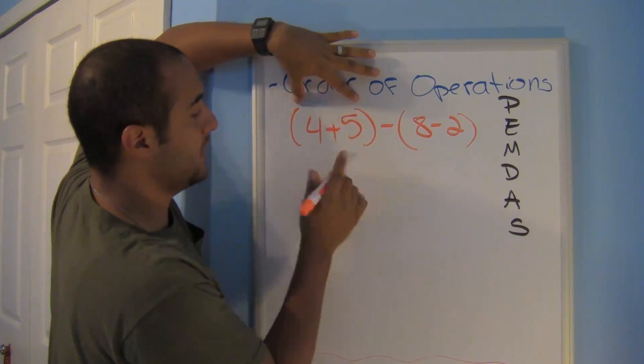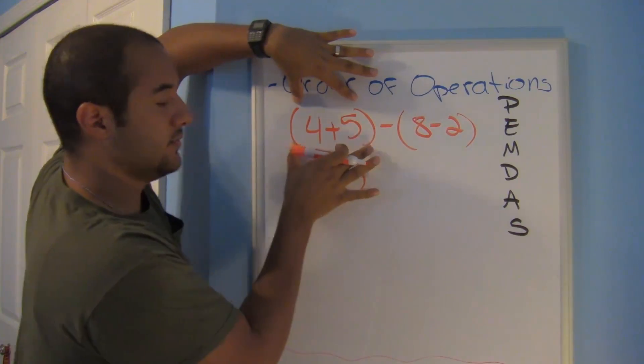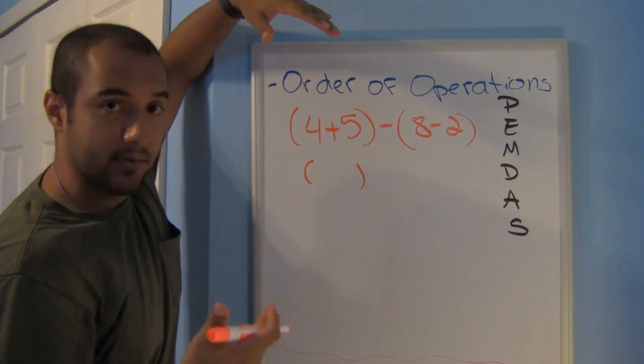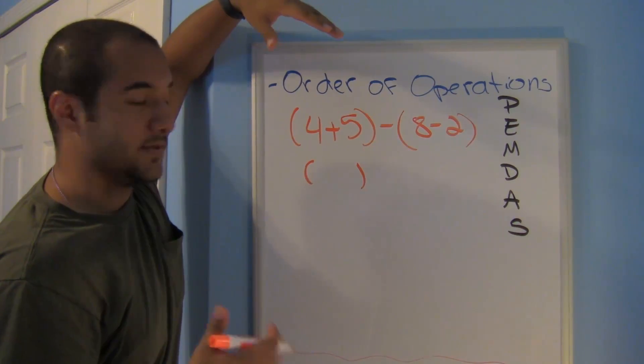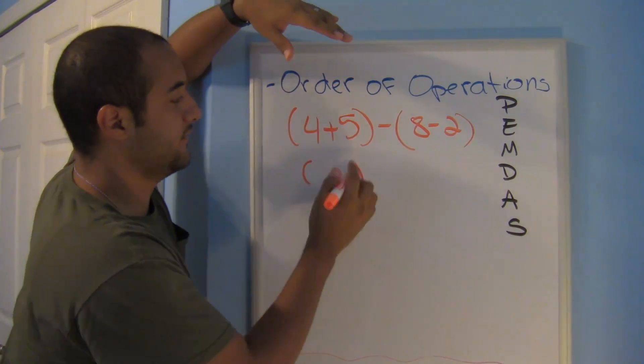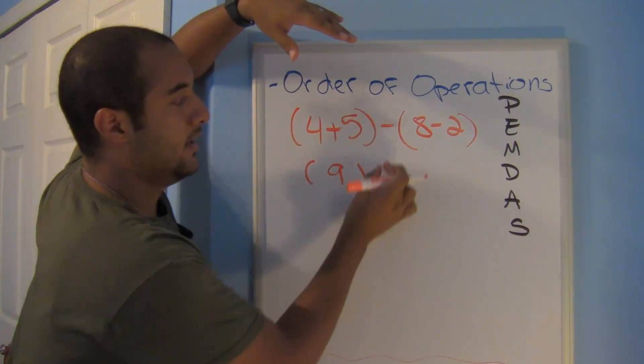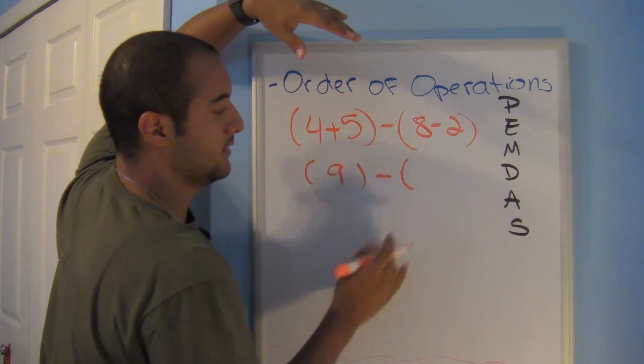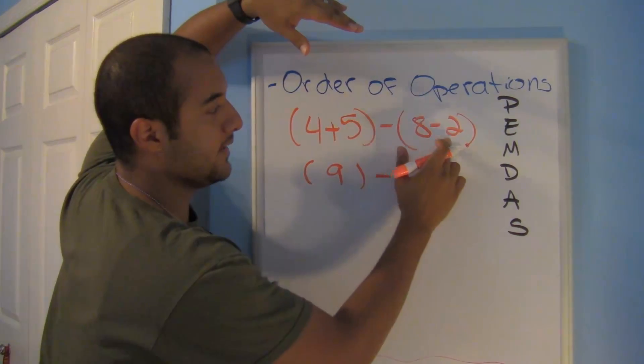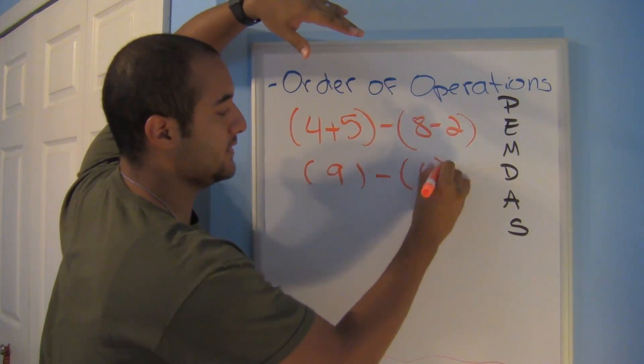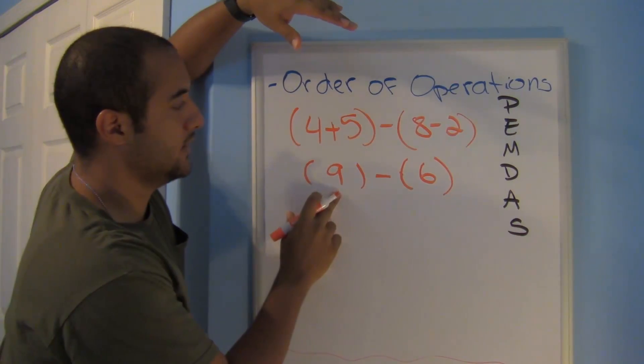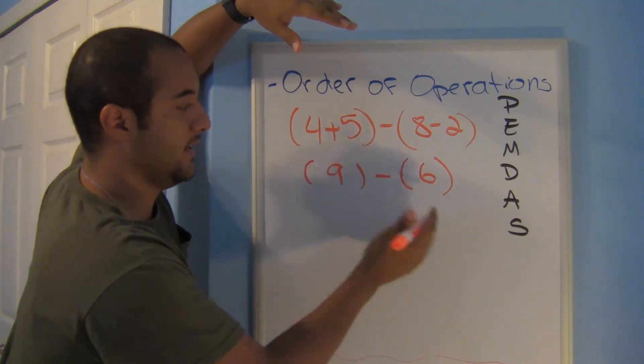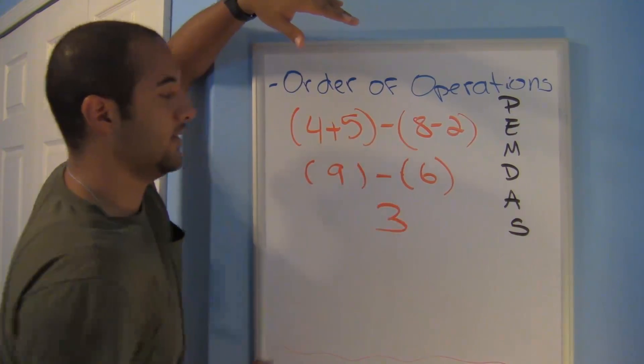So 4 plus 5. And notice that I'm going to write a parentheses underneath that just in case. Depending on the problem, you don't have to, but sometimes it helps. 4 plus 5 is 9. I didn't touch this. So bring it down. Bring down that subtraction sign. And I have 8 minus 2. 8 minus 2 is 6. So now all I have is 9 minus 6. 9 minus 6 is 3.